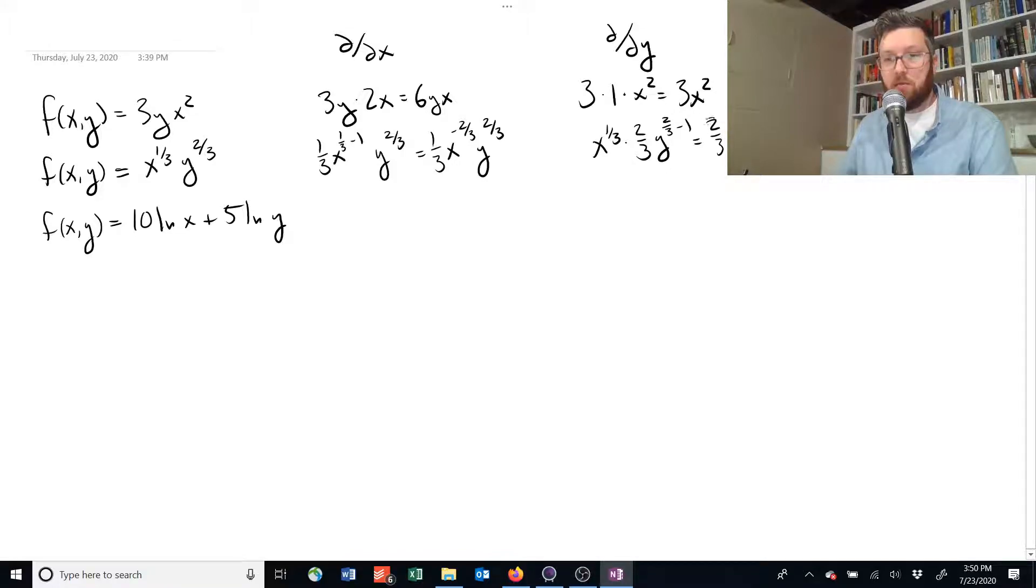I'm going to run out of room, aren't I? Let's do it down here. Two-thirds x to the one-third times y to the negative one-third, because two-thirds minus one is negative one-third.